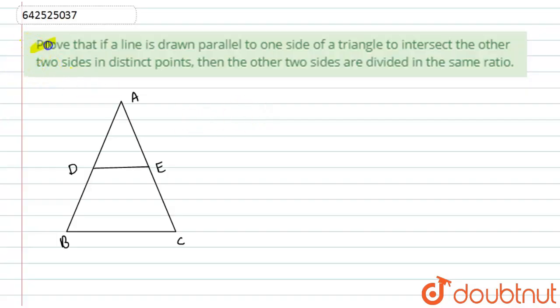Here we have to prove that if a line is drawn parallel to one side of a triangle, intersecting the other two sides in distinct points, then the other two sides are divided in the same ratio.